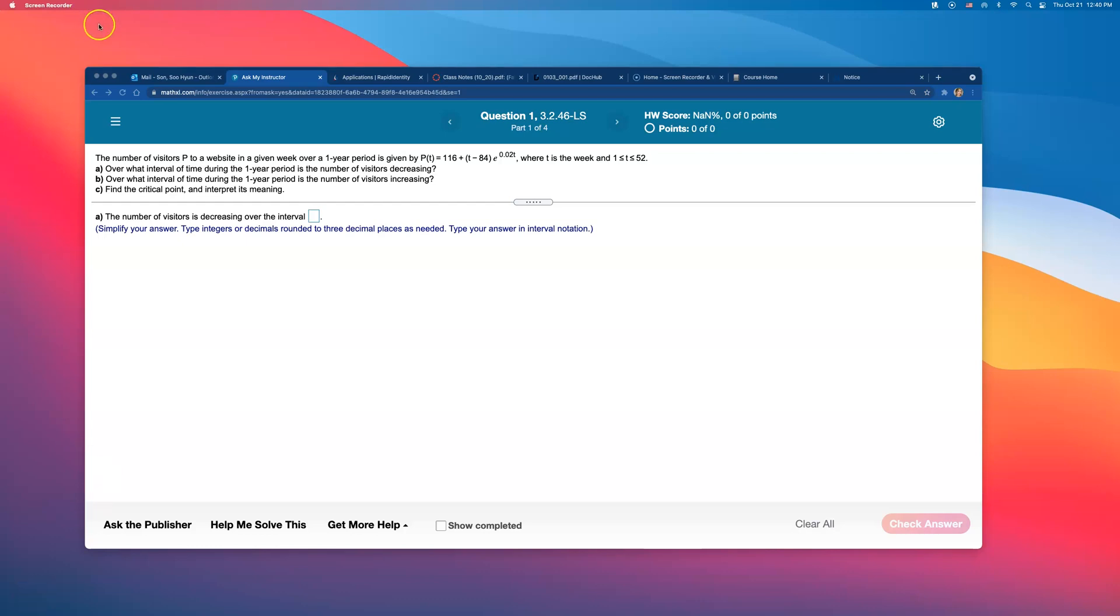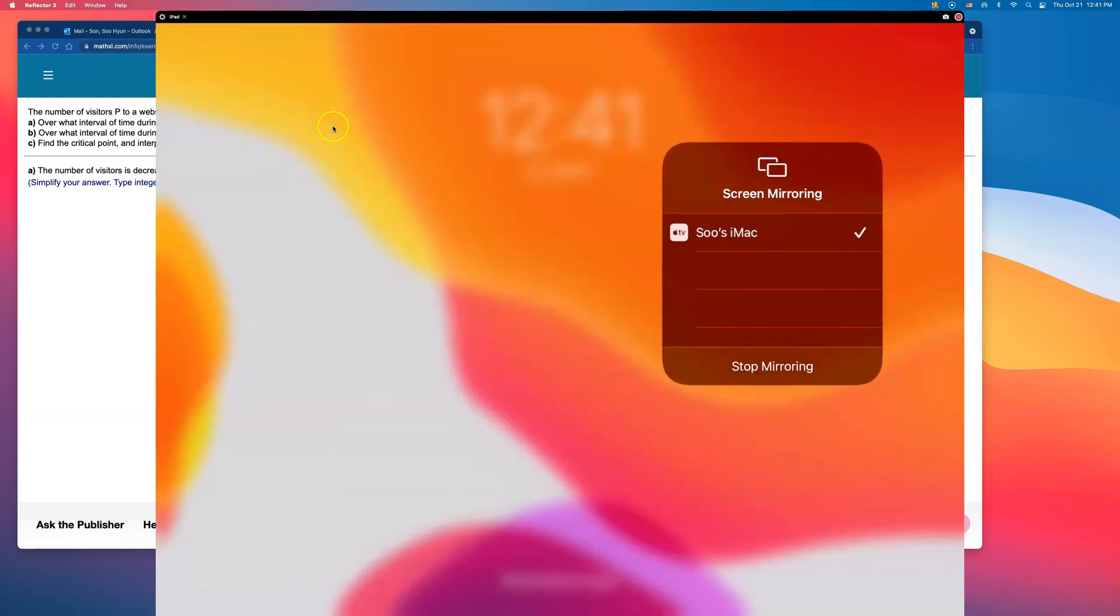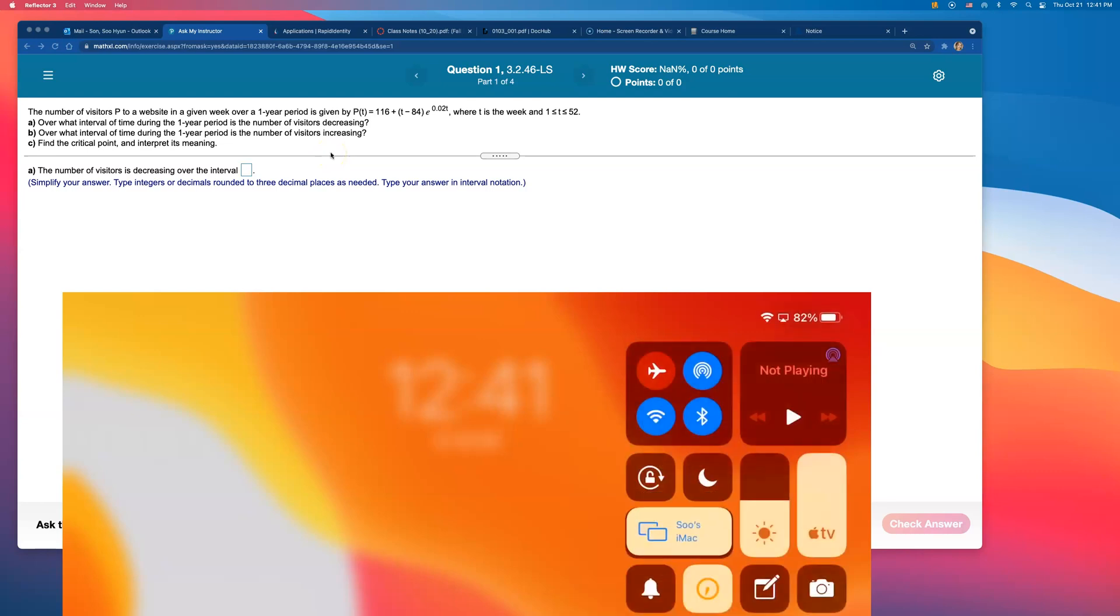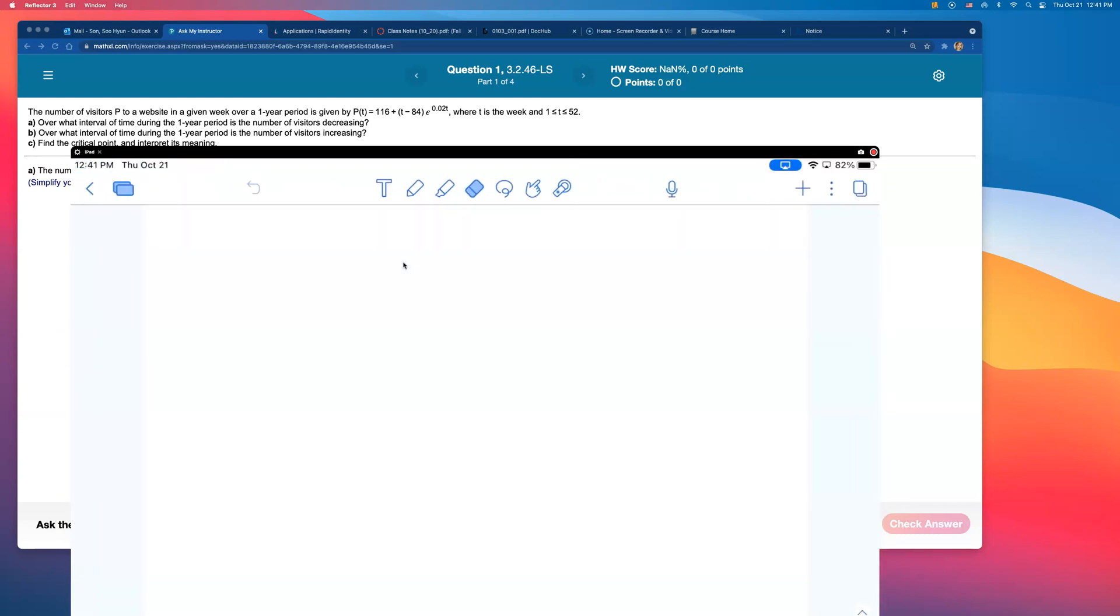All right, a number of visitors P to a website in a given week over a one year period is given by this function where T is the weeks and T is in between one week to 52 weeks because we have 52 weeks in a year. They're looking at how many people are coming to visit this website. Sometimes the number of visitors are increasing, sometimes it is decreasing. Over what interval of time during one year period is the number of visitors decreasing or increasing? In order to answer that, let's find the critical value. To find the critical value, we're going to need to find the derivative and set it equal to zero. So let me open up a tablet and start writing.